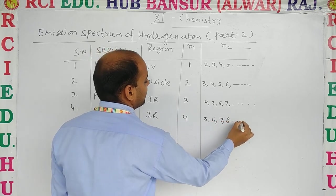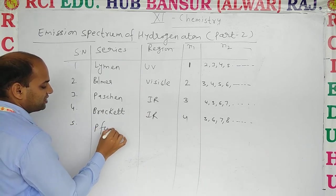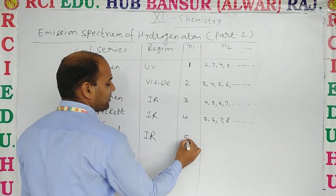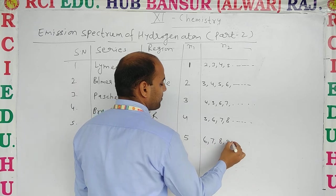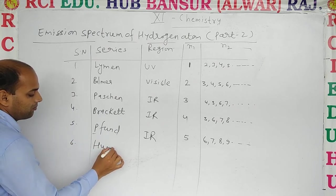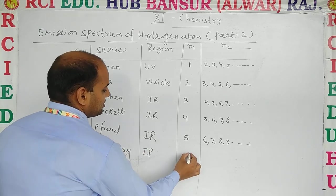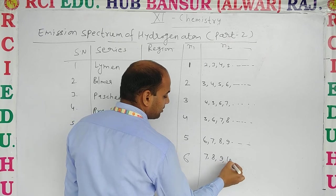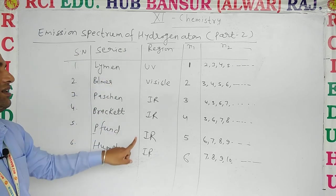For the fifth series — Pfund series — it is also in the infrared (IR) region. For Pfund series, n1 = 5, and n2 can be 6, 7, 8, 9, and so on. The sixth series is the Humphrey series, also in the IR region, with n1 = 6, and n2 going from 7, 8, 9, 10, and beyond.